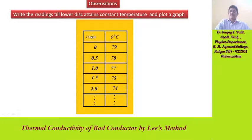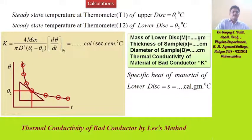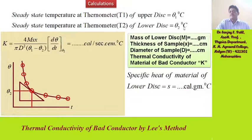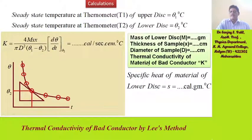Write the readings in tabular form and plot the graph, which is the cooling curve of theta versus time. The steady-state temperature at thermometer T1 of the upper disk is theta1 degrees centigrade, and the steady-state temperature at thermometer T2 of the lower disk is theta2 degrees centigrade. Mass of the lower disk is M in grams, thickness of the sample is X in centimeters, and diameter of the sample is D in centimeters.